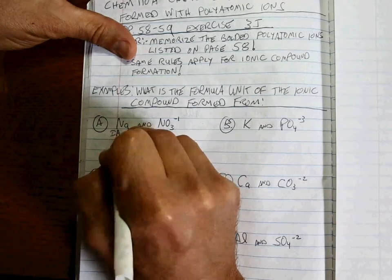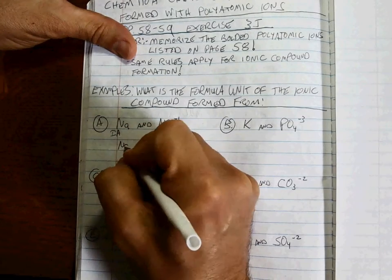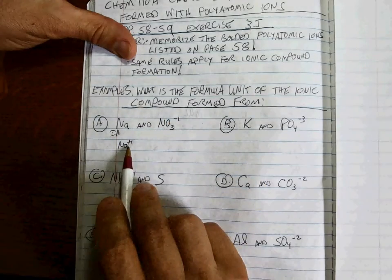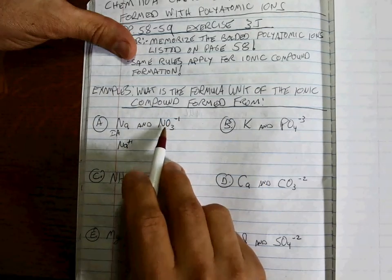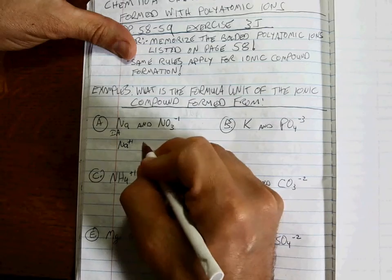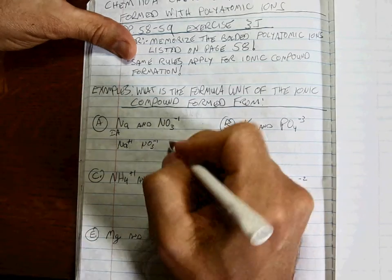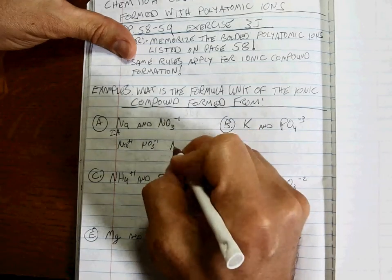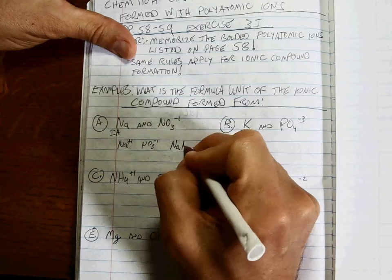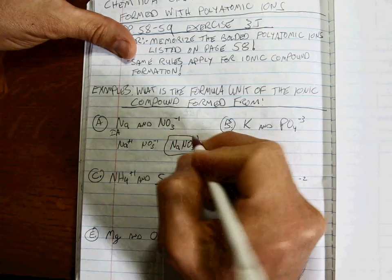Sodium is a Group 1A element, so sodium likes to make a +1 charge. If we have a +1 and a -1, we put the formula together and it's pretty simple: NaNO3.